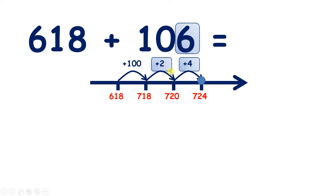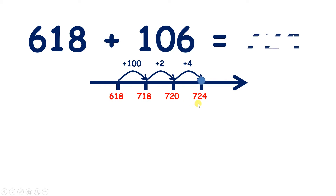That takes us to 724. So we added two, and then we added four, so we added six altogether. So 618 plus 106 is 724.